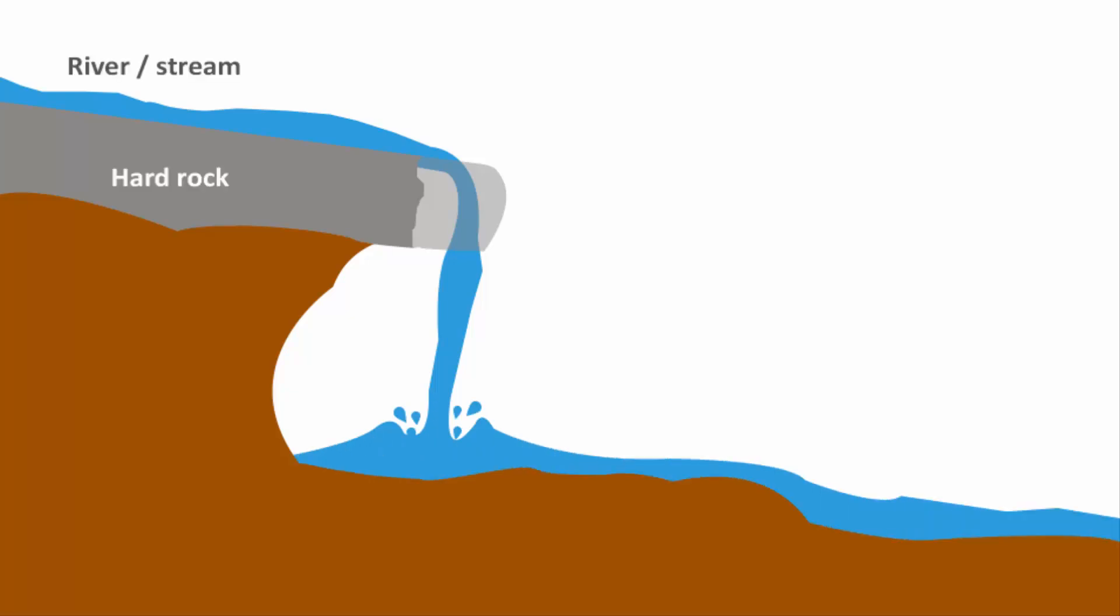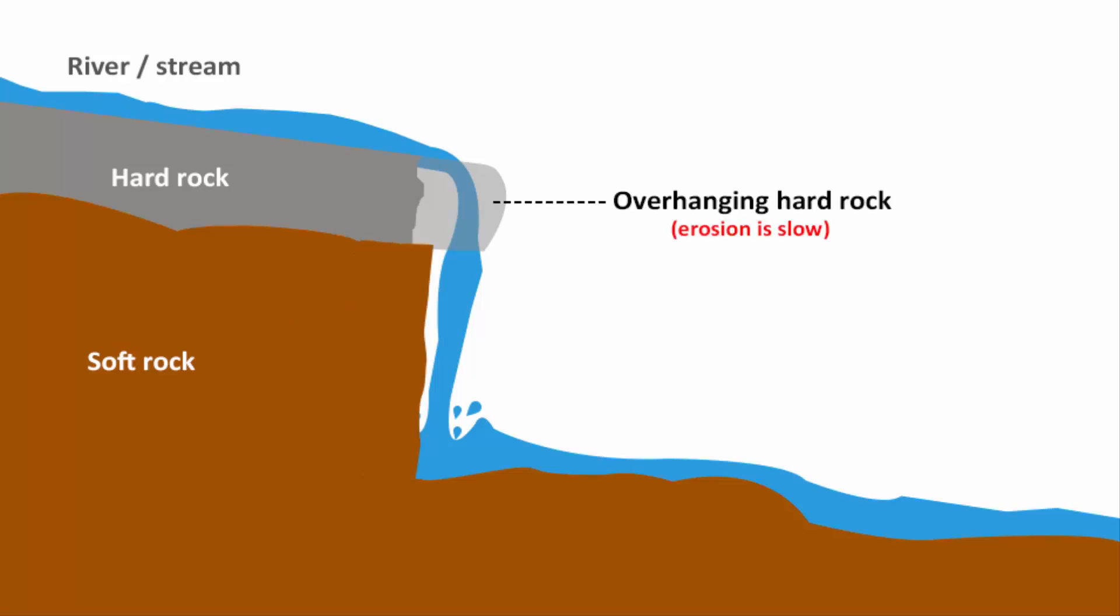Waterfalls are formed when the riverbed changes from hard rock to soft rock. So what happens is that the river flows on two different types of platforms. One is a hard layer of rock and the other one is a soft layer. In other words, you have a river or stream flowing over hard rock where erosion is slow and also flowing over soft rock where erosion is more rapid.